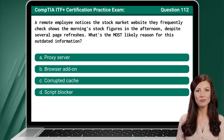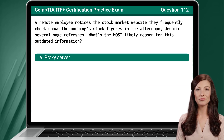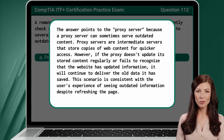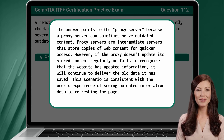Question 112. A remote employee notices the stock market website they frequently check shows the morning stock figures in the afternoon, despite several page refreshes. What's the most likely reason for this outdated information? The answer is A: Proxy server. A proxy server can sometimes serve outdated content. Proxy servers are intermediate servers that store copies of web content for quicker access. However, if the proxy doesn't update its stored content regularly or fails to recognize that the website has updated information, it will continue to deliver the old data it has saved. This scenario is consistent with the user's experience of seeing outdated information despite refreshing the page.